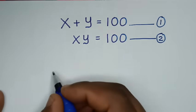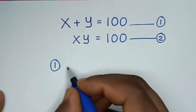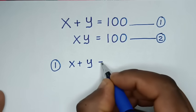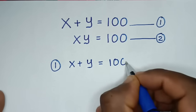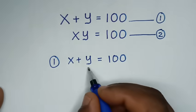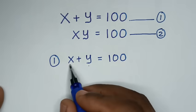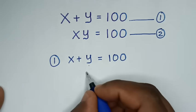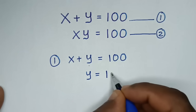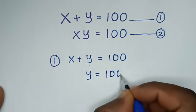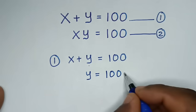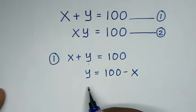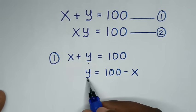From equation 1, which is x plus y is equal to 100, we will make y the subject, so we will take x to the right side. It will be y is equal to 100 minus x. Note this equation in terms of y.